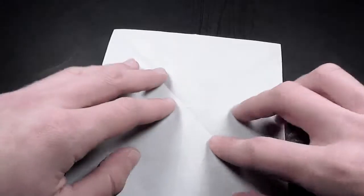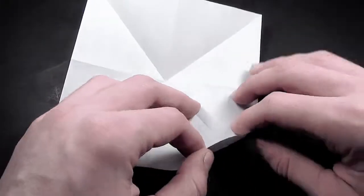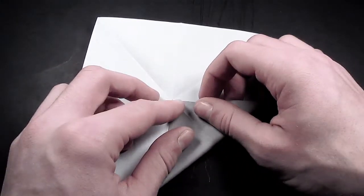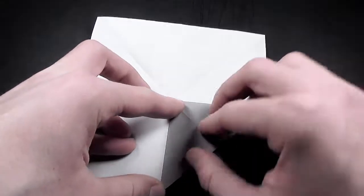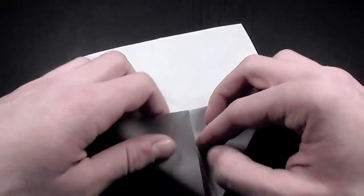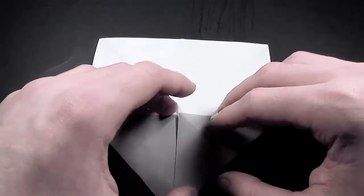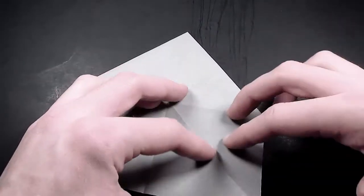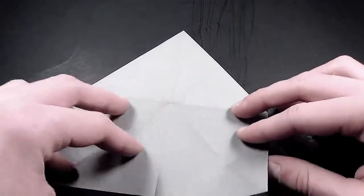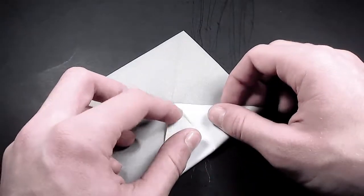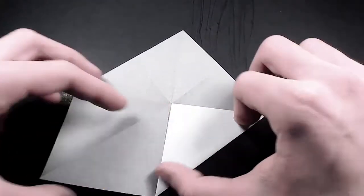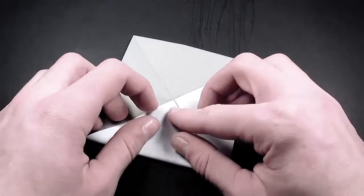And now that we have that done, let's take the bottom right corner, and fold it up to the center. And let's do the same thing with the bottom left corner. Then, let's turn over top to bottom. And we'll fold, and do the same thing. Fold the bottom right corner up to the center. Then, fold the bottom left corner up to the center.